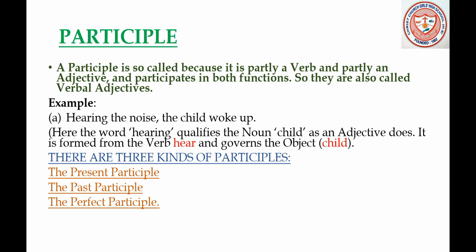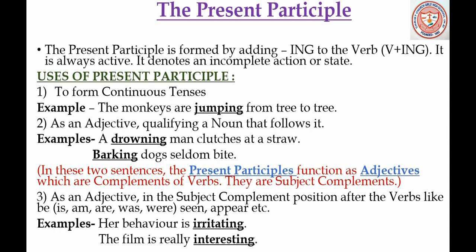Now there are three kinds of participles: the present participle, the past participle, and the perfect participle. The present participle is formed by adding 'ing' to the verb — that is, verb plus ing. It is always active and it denotes an incomplete action or state, which means the action is not yet over.